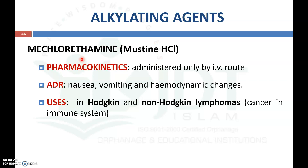The first drug is mechlorethamine, also known as mustine hydrochloride. It is usually administered only by the IV route. Important adverse drug reactions include nausea, vomiting, and hemodynamic changes. It is mainly used for Hodgkin's and non-Hodgkin's lymphoma, two types of carcinoma present in the immune system.